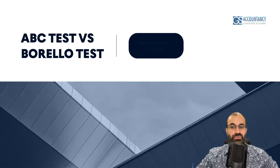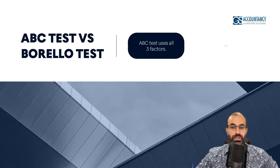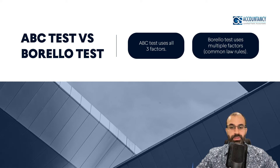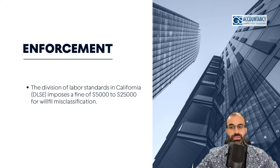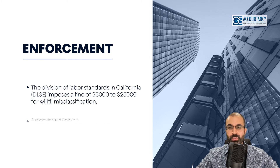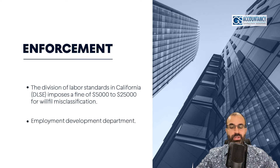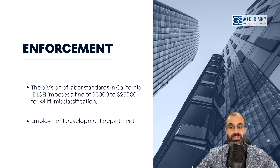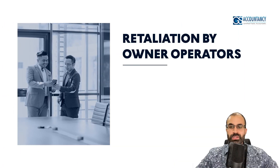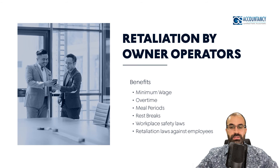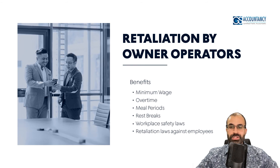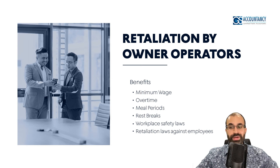Under the ABC test you have to pass all three parts of the test. The older Borello test uses multiple factors, also known as common law factors, and will be used for certain professions. Enforcement of AB5 will be done by the Division of Labor in California, which is the state equivalent to the US Department of Labor. When the EDD comes to audit for payroll taxes, they will include your owner operators in any payroll tax assessment. If misclassified workers such as your owner operators want to retaliate, they would be allowed employee benefits, can file complaints with state agencies such as the EDD and Division of Labor, and can also file a lawsuit in court.